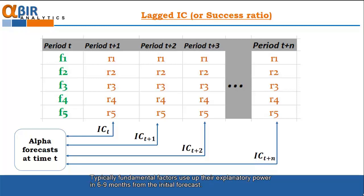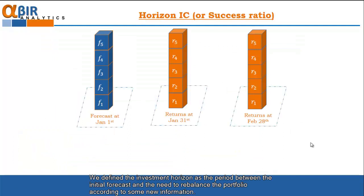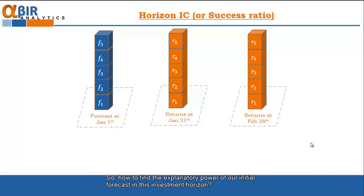Typically, the fundamental factors lose their explanatory power in six or nine months from the initial forecast. We define the investment horizon as the period between the initial forecast and the need to rebalance the portfolio according to some new information. So, how to find the explanatory power of our initial forecast inside this investment horizon?